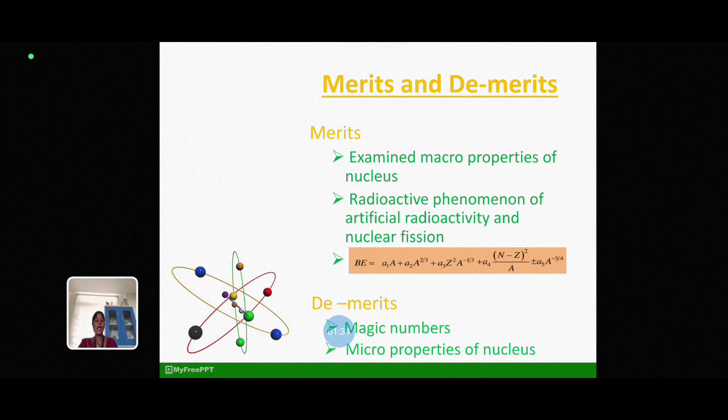Next, it explains well about the radioactive phenomenon of artificial radioactivity and nuclear fission. It can be also used to obtain an expression for the binding energy of the nucleus which was proposed by Weizsacker. It is also known as the semi-empirical mass formula for a nucleus of mass number A that contains Z protons and N neutrons. In this expression, the first term is referred as volume energy of a nucleus and the second term is referred as surface energy of a nucleus.